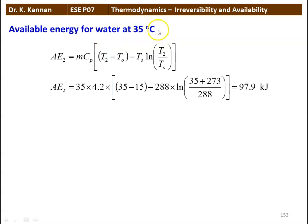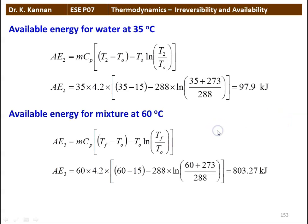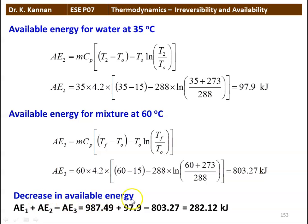Available energy AE2 for water at 35 degrees Celsius: AE2 equals MCP times (T2 minus T0 minus T0 times ln(T2/T0)): 35 times 4.2 times (35 minus 15 minus 288 times ln(308/288)) equals 97.9 kilojoules. Available energy AE3 for the mixture at 60 degrees Celsius: 60 times 4.2 times (60 minus 15 minus 288 times ln(333/288)) equals 803.27 kilojoules. Decrease in available energy: AE1 plus AE2 minus AE3 equals 987.49 plus 97.9 minus 803.27 equals 282.12 kilojoules, approximately 281.8 kilojoules.